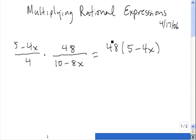So if I multiply across the tops, I get 48 times (5 - 4x). Then I need to multiply across the bottom, and I get 4 times (10 - 8x).